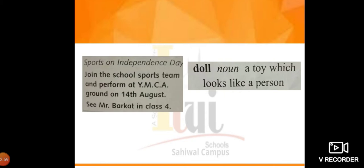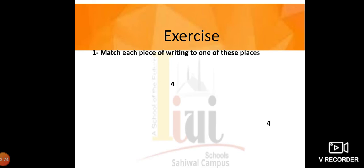The last one reads: 'Doll — noun. A toy which looks like a person.' These words are taken from a dictionary because they are telling us what kind of word 'doll' is — it is a noun, meaning a toy that looks like a person. So this piece of writing is from a dictionary.